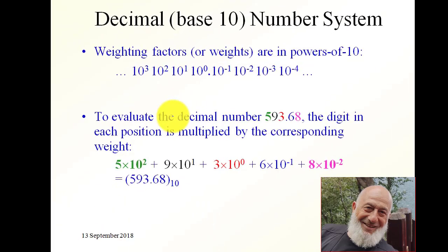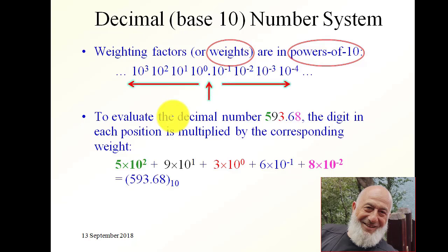In the decimal, base-10 numbering system, the weighting factors — or weights — are powers of 10. This is the decimal point, and the weights to the right of the decimal point are 10 to the minus 1, 10 to the minus 2, 10 to the minus 3, and so on.